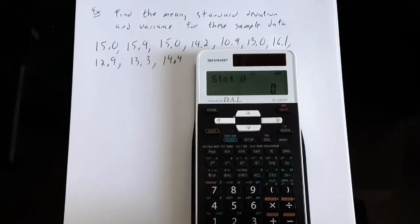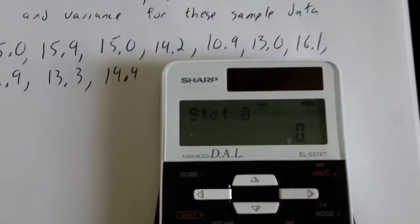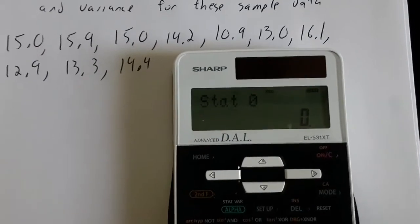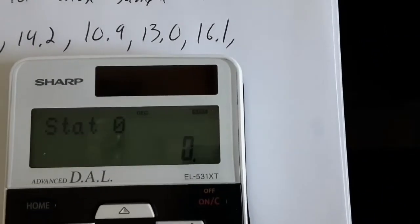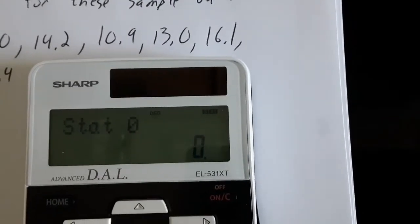And now we can see in the display window it says two things. It says stat 0, letting you know which stat mode that you're in. And if we look at the top right hand corner, it says stat there as well. That's another reminder that you are in stats mode.